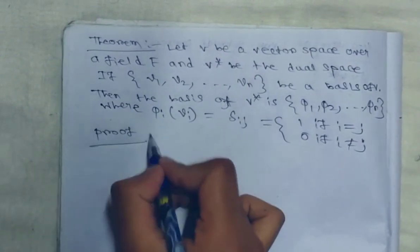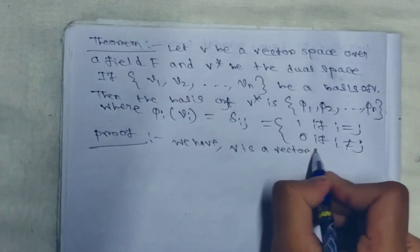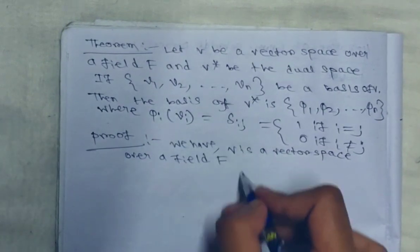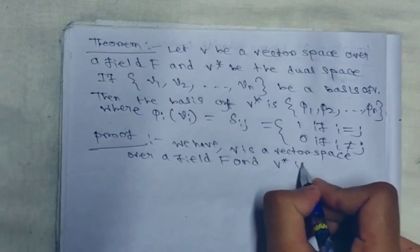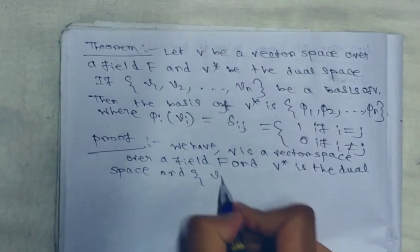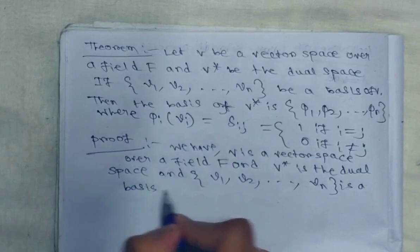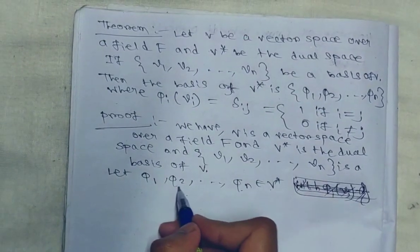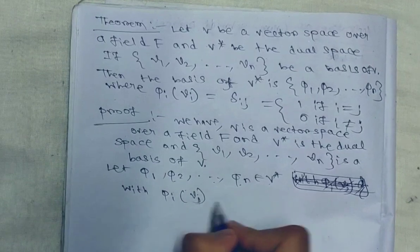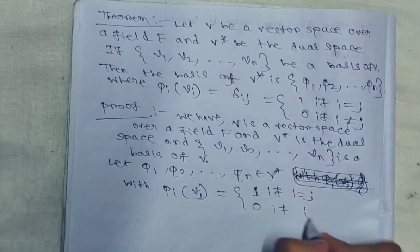Proof. We have V is a vector space over a field F, and V* is the dual space, and V1, V2, ..., Vn is a basis of V. Now let φ1, φ2, ..., φn belong to V* with φi(Vj) = 1 if i equals j, and 0 if i does not equal j.